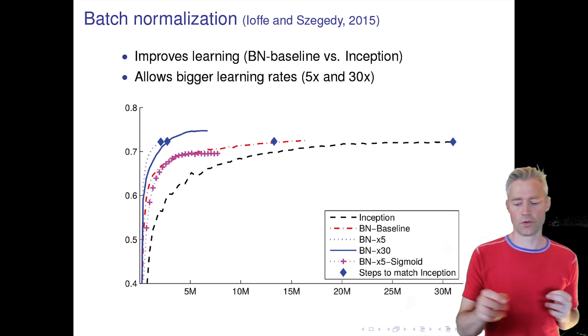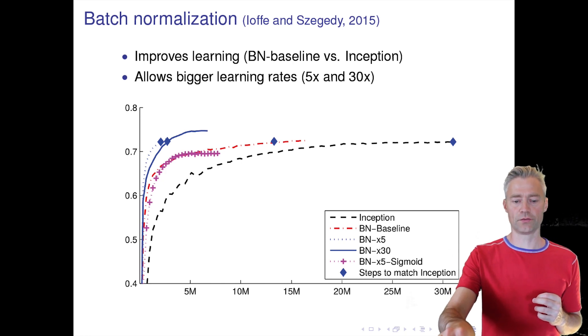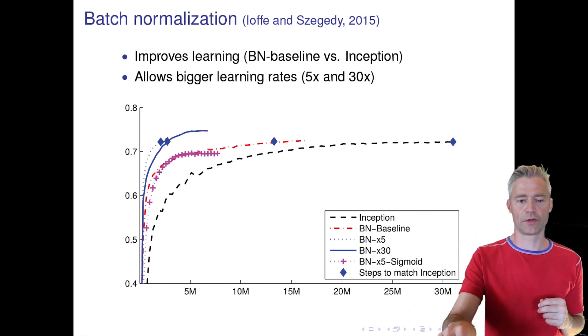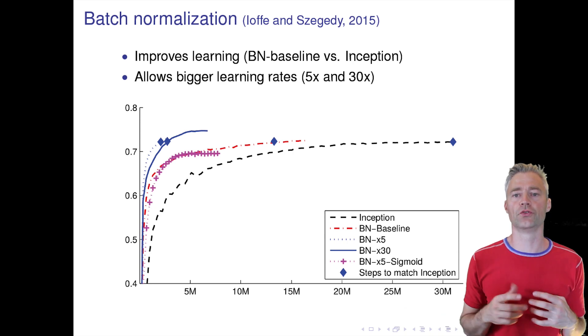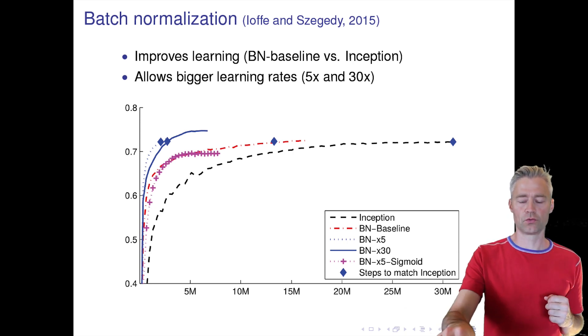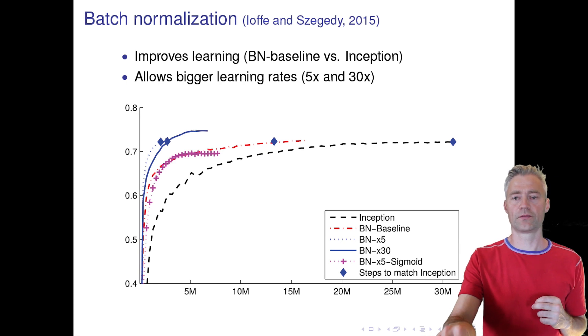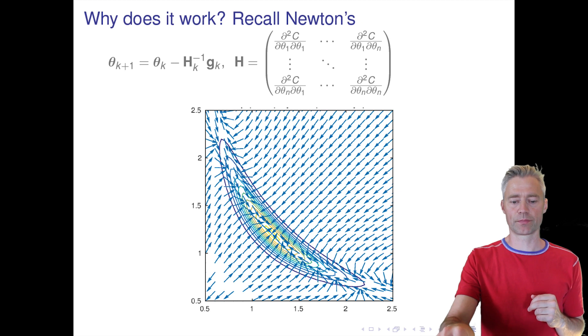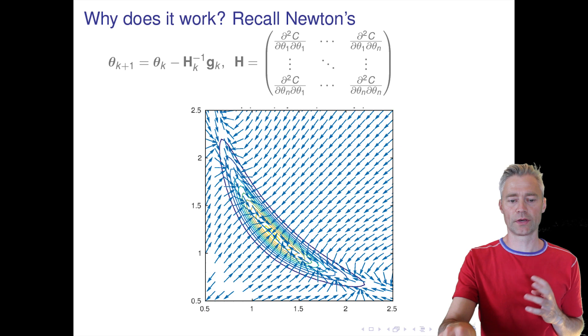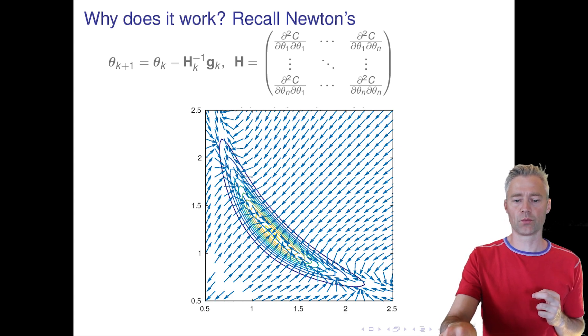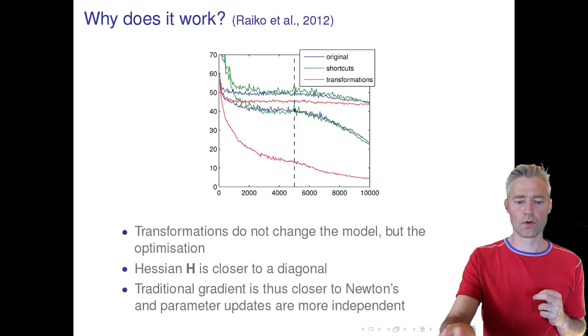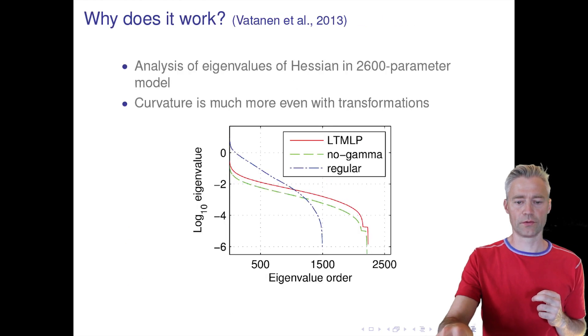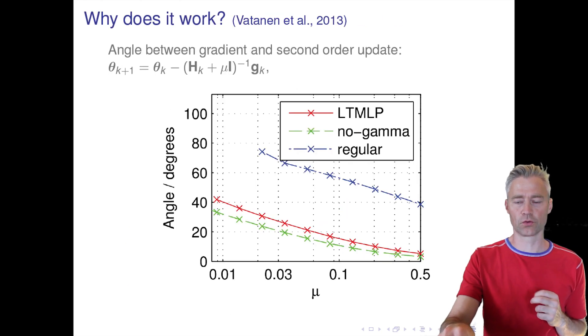This is something we use all the time now, batch normalization, and there's also been recent new suggestions of how to do other types of this kind of layer-wise normalization. Here are a few slides from Tapani that discuss how we can actually understand why this works—I'll just jump over that, it's for you to study yourself, and there's also references to these papers at the end of the slides.